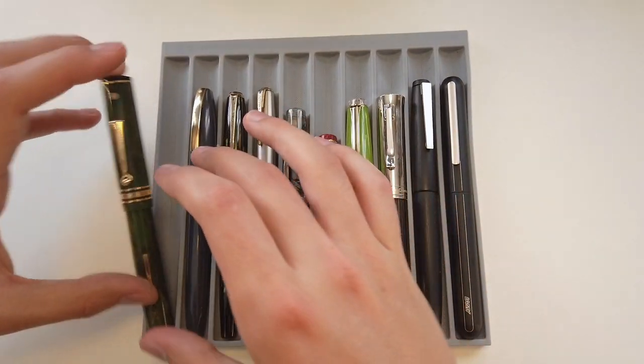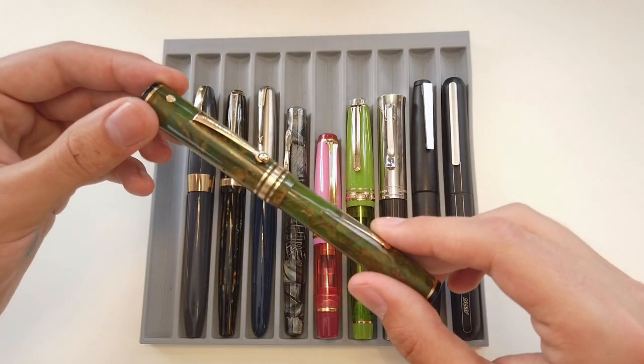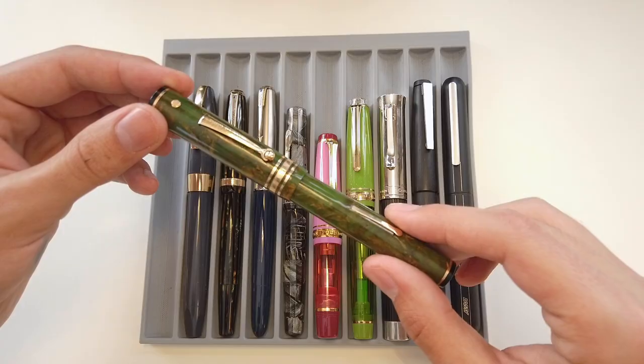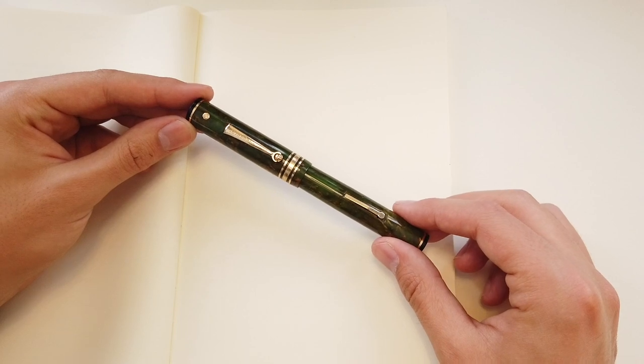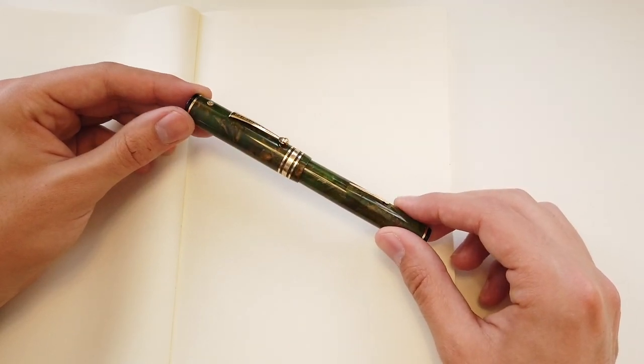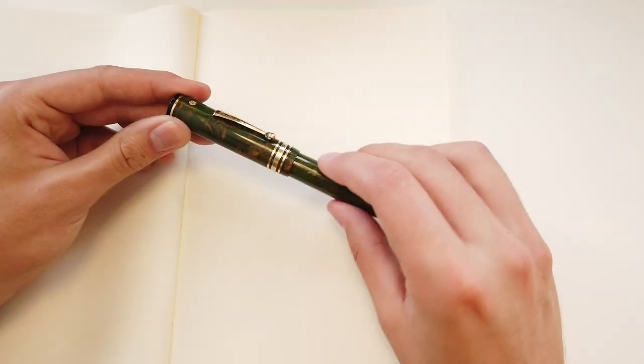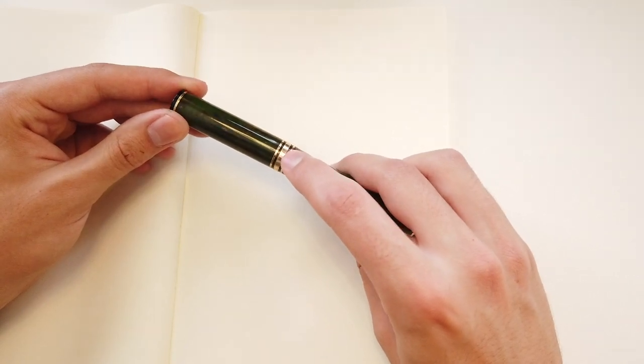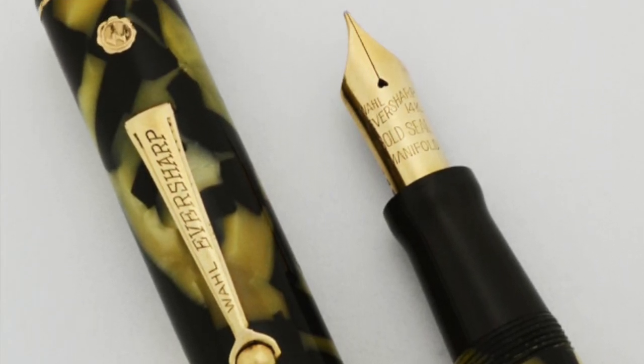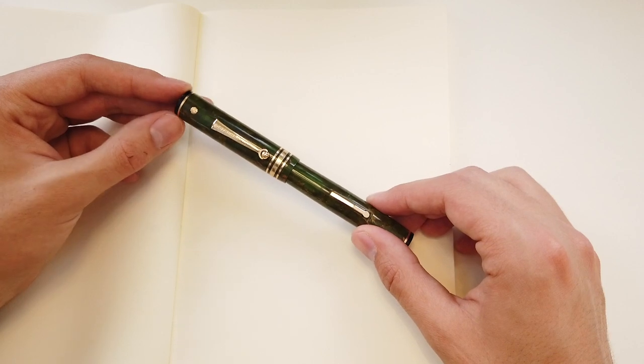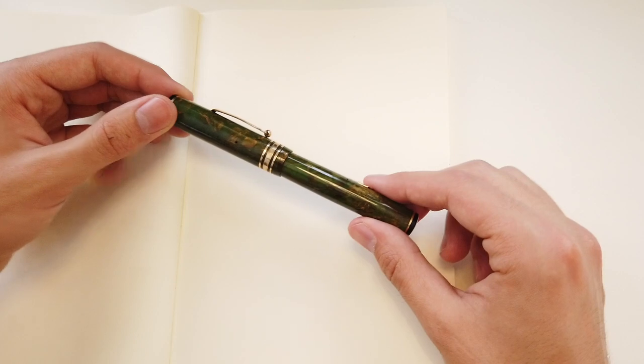Starting from the far left, we have the Wall Eversharp Gold Seal Oversize in the green bronze celluloid. First and decidedly not the worst, this model is often referred to as a deco band erroneously. This is actually not a deco banded model. It has the rhombus bands, but I'll put a picture of what an actual deco band looks like.